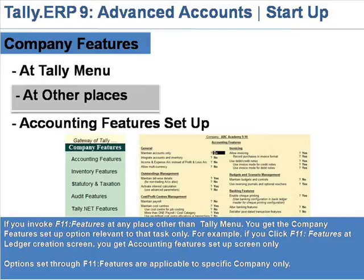If you invoke F11 Features at a place other than the Tally menu, you get the company features setup option relevant to that task only. For example, if you click F11 Features at the Ledger Creation option screen, you get the Accounting Features setup screen only.